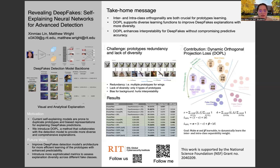Looking at our different DOPL variants, each offers unique trade-offs. The softplus version provides a lower cost at 0.023, making it ideal for applications where computational efficiency is crucial. The sigmoid variant shows stronger separation between prototypes with a cluster cost of 0.052, useful when we need very distinct decision boundaries. Most importantly, these improvements in prototype diversity and efficiency came without sacrificing detection accuracy, addressing one of our key design goals.